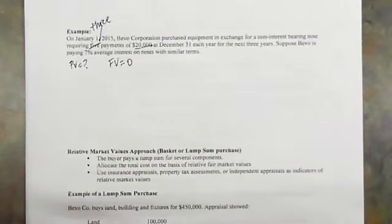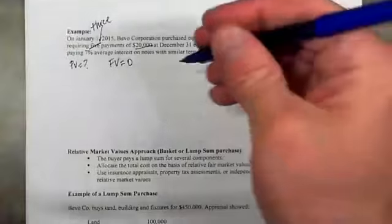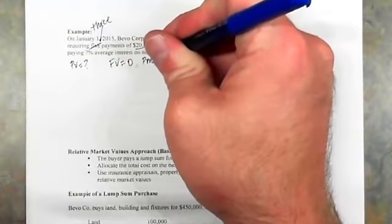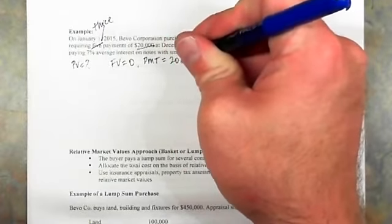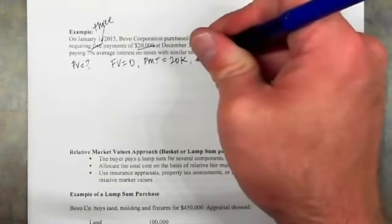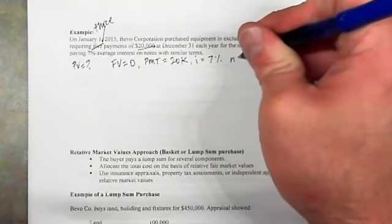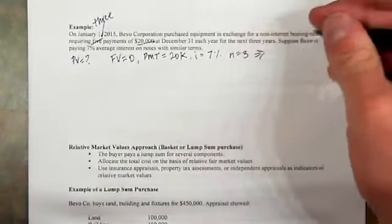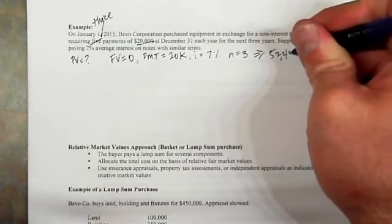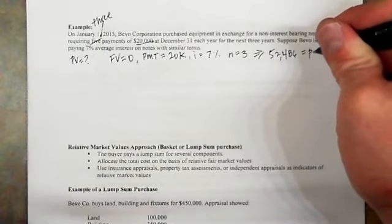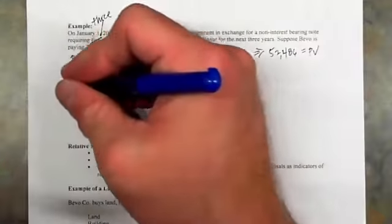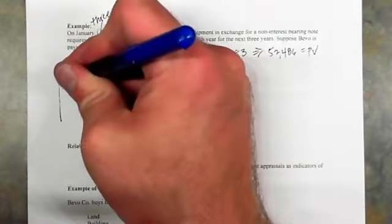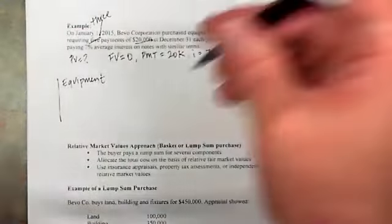We're looking for the present value. We have a future value of zero — it's not $60,000. The $60,000 is the face value, but we're solving for the present value in this instance. The payments are $20,000, occurring at the end of each year for three years. We have an interest rate of 7%, and the number of years is three. If you put all this into your present value calculator, you're going to get a present value of $52,486. Then when you go to record the equipment, you want to record it at that cash equivalent present value.